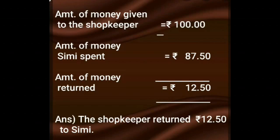First, write the statement: amount of money given to the shopkeeper is equal to rupees 100. Amount of money Simi spent is equal to rupees 87.50. Now subtract these two amounts. 0 minus 0 is 0. 0 is smaller, so borrow 10 — 10 minus 5 is equal to 5.